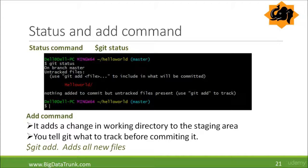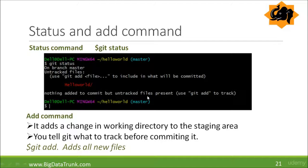Now let's look at the status and add commands. The git status command gives you the actual state of the working directory and the staging area. When you type git status in git bash, you can see the untracked files. It basically lists which files are staged, unstaged, and untracked. It will indicate untracked files and suggest that you use git add to track them.